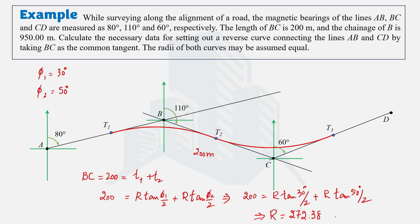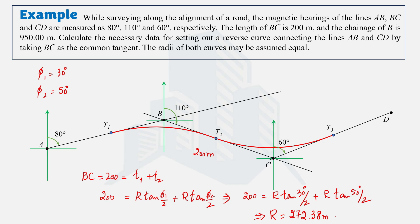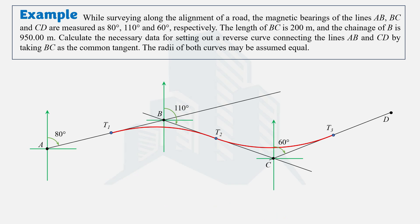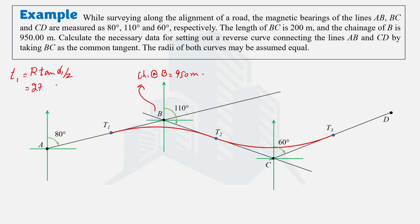Doing the calculation gives a radius R of 272.38 meters. Now let's calculate the chainages at the key points. We are given the chainage at B as 950 meters. To find the chainage at T1, we first calculate the tangent length of the first curve using the formula with R and Δ1.